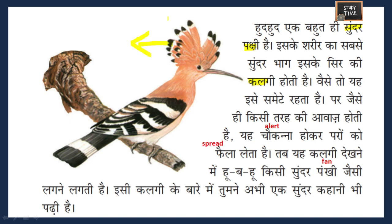The Hudhud is a very beautiful bird. The most beautiful part of its whole body is its kalgi - this crest. Usually it keeps the crest folded, but when there is any sound or emergency situation to alert, it spreads all its kalgi. When you see that spread crest it looks like a beautiful fan.